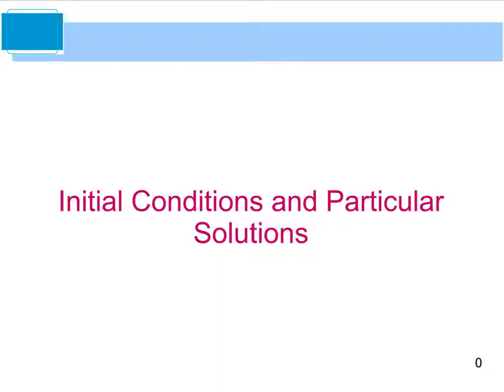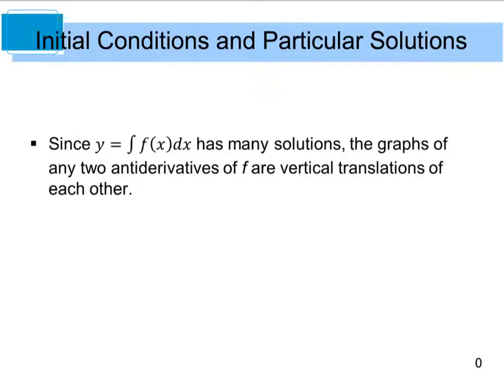Today, however, we're going to look specifically at initial conditions and particular solutions. We talked about this a little bit in part 1, but when we take the integral of a function and it's an indefinite integral, we know that there are many solutions. That's why we include the plus c. So any two of those solutions are going to be similar to each other, but they're going to only be different by a vertical translation of one another.